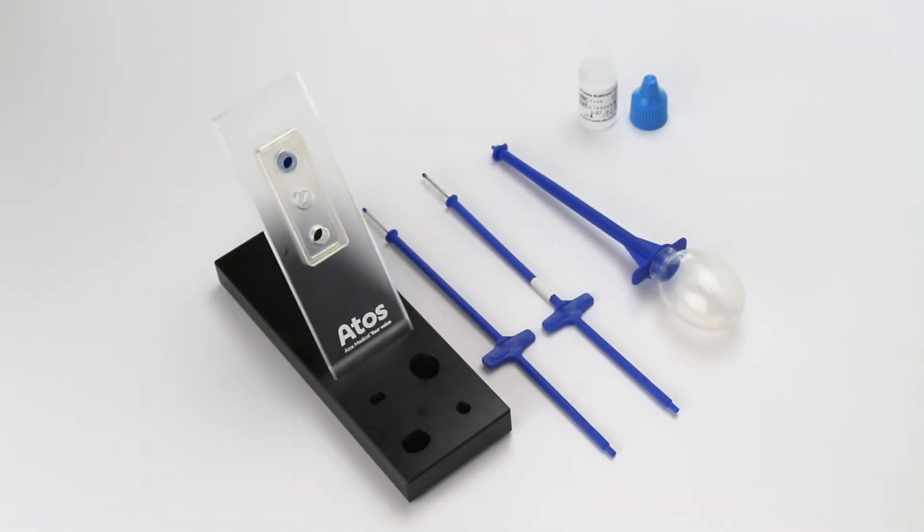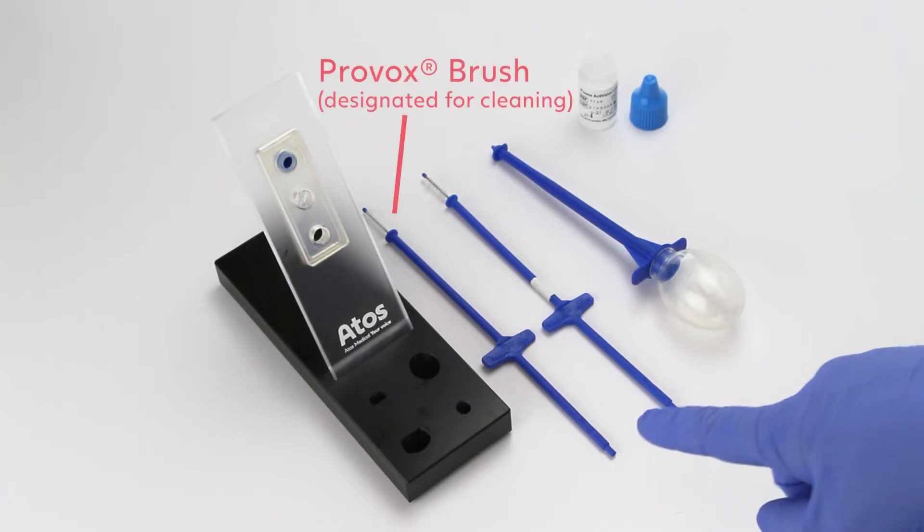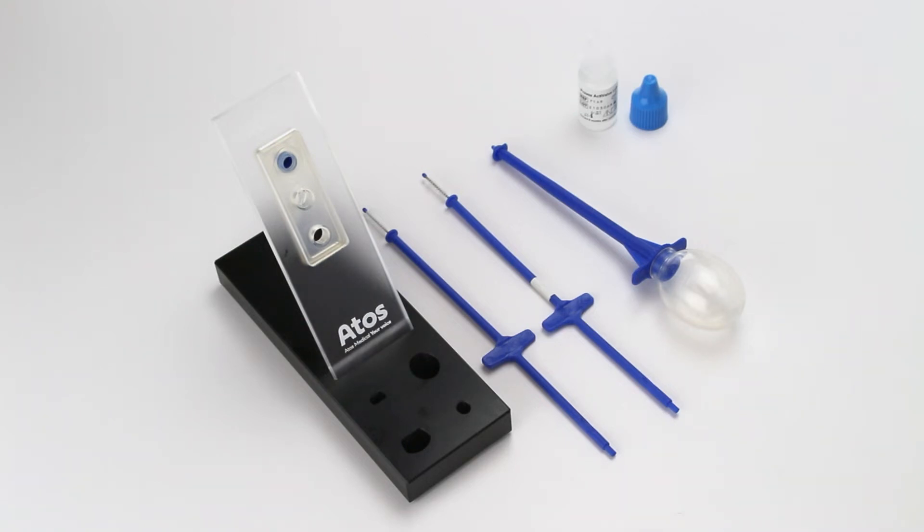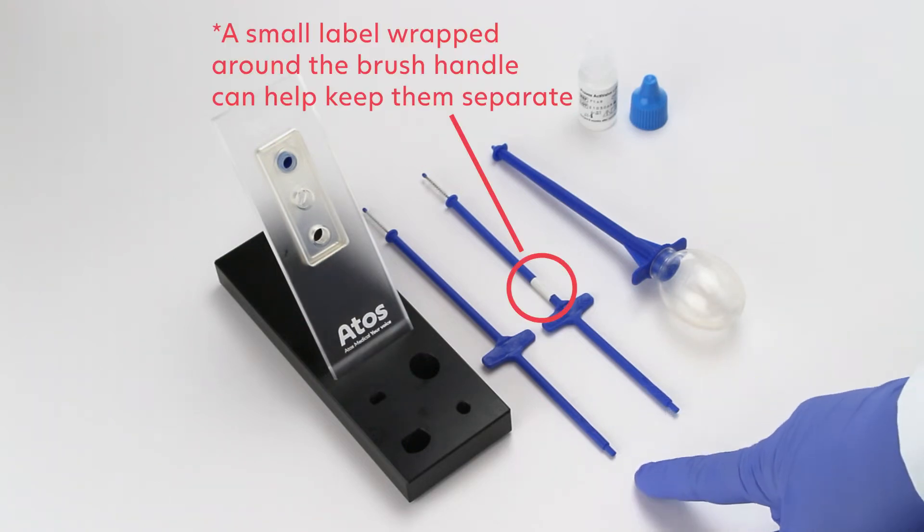For care and maintenance, there are two brushes included with your Provox Active Valve: one brush for cleaning and one for applying lubricant. It is important to keep the brushes dedicated as only a cleaning brush or only a lubricant brush.